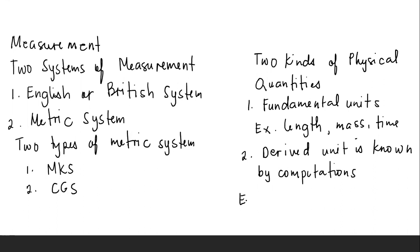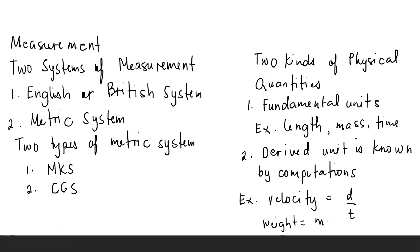For example, velocity is a derived unit because velocity is equal to distance per unit time. Then weight is equal to mass multiplied by gravity.